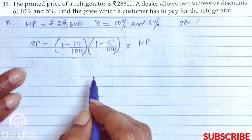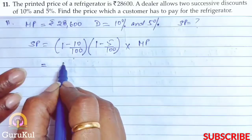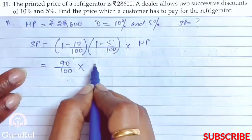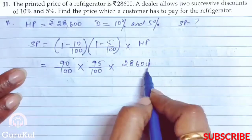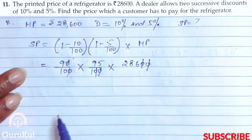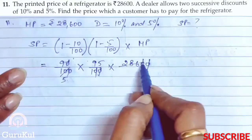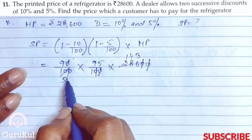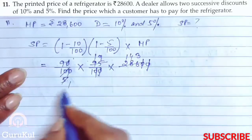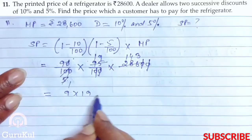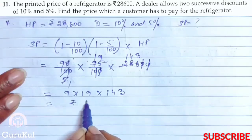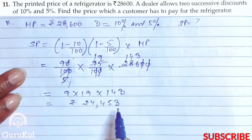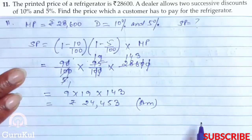Solving this: SP = 90/100 into 95/100 into 28,600. Cancelling the zeros and simplifying — 2 fives give 10, and further reducing — 9 × 19 × 143 gives us Rs. 24,453. This is the amount the customer has to pay for the refrigerator after getting two successive discounts.